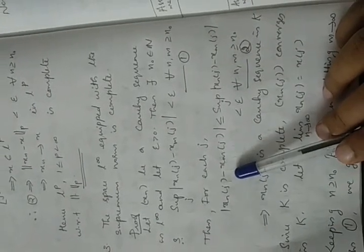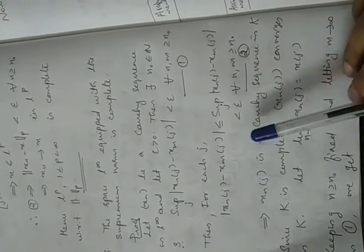From this, we can conclude that the sequence Xn(j) is a Cauchy sequence in K for each j = 1, 2, 3, …, and we know that K is a complete space. So the sequence Xn(j) converges in K. Let the limit of Xn(j) as n → ∞ equal X(j), so that we can define a sequence X = (X(1), X(2), …).